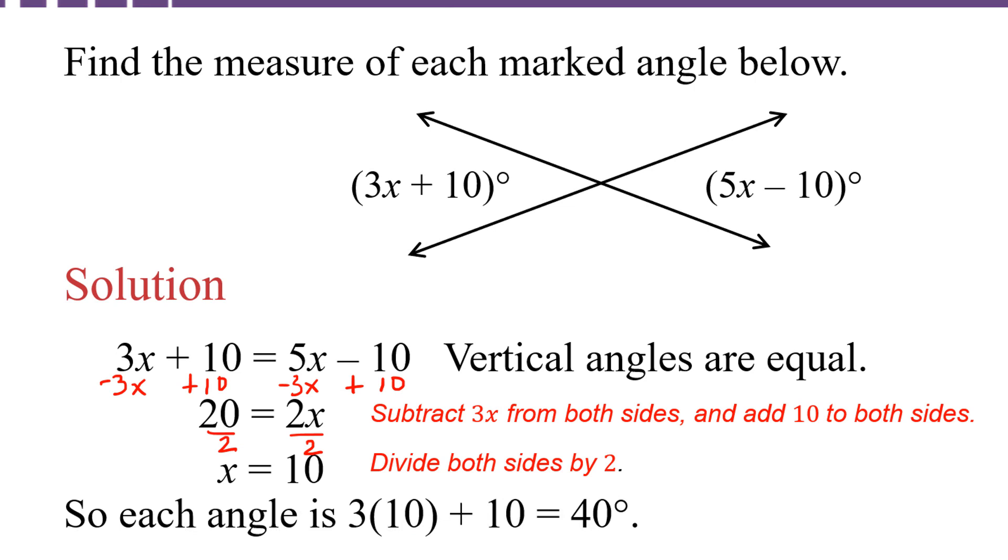Plugging 10 in for x we get 3 times 10 plus 10 equals 40 degrees. Now we know both of the angles are the same so both angles must be 40 degrees. But you could confirm that by plugging 10 into 5x minus 10 as well and it works out exactly the same.